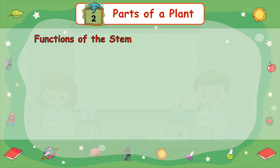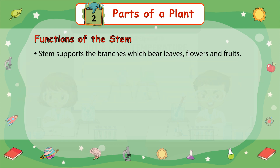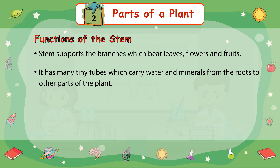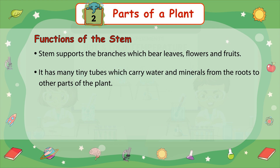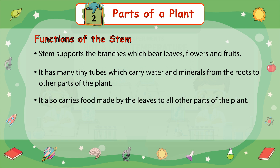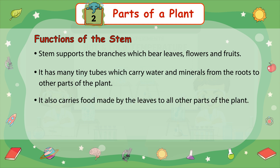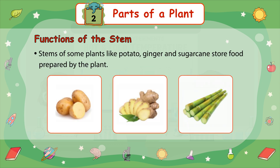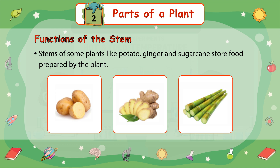Functions of the stem: stems support the branches, which bear leaves, flowers, and fruits. It has many tiny tubes which carry water and minerals from the roots to the other parts of the plant. It also carries food made by the leaves to all other parts of the plant. Stems of some plants like potato, ginger, and sugarcane store food prepared by the plant.